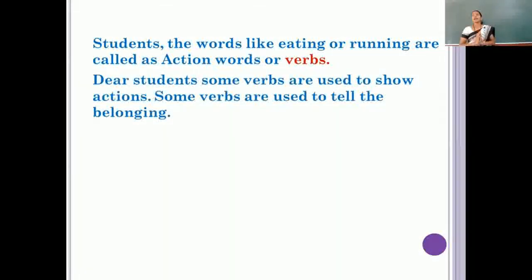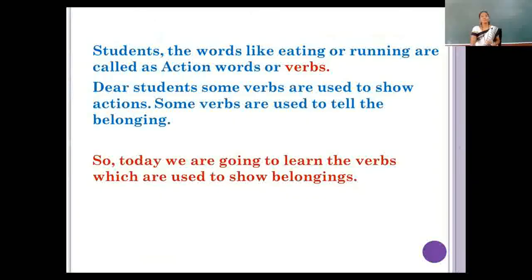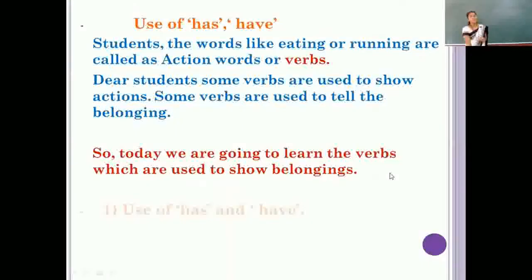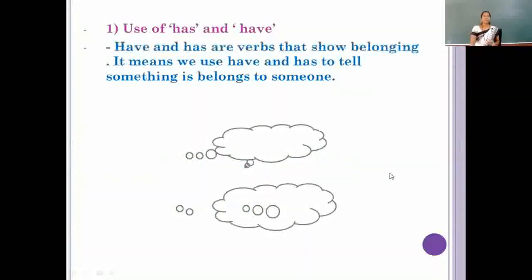Dear students, some verbs are used to show action, but some verbs are used to tell the belonging. So today, we are going to learn the verbs which are used to show the belonging, and those are has and have. Have and has are verbs that show belonging. It means we use have and has to tell that something belongs to someone.